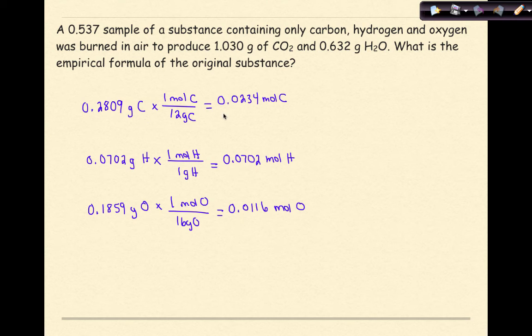Alright, so I've gone from mass to mole for each of these. The next step is to figure out which one is the smallest one and divide everything else by that smallest number. So I look at these numbers and I say, hey, you're the smallest number right here. So 0.0116, divide this one by 0.0116, and divide this one by 0.0116, and what do I get? Well, for this one I get 2, for this one I get 6, and for this one I get 1.